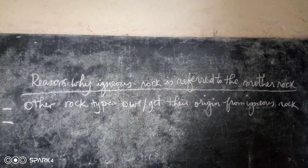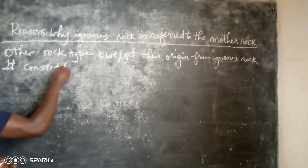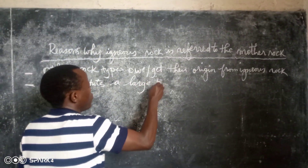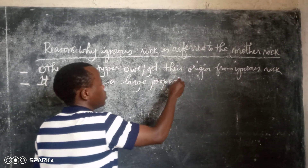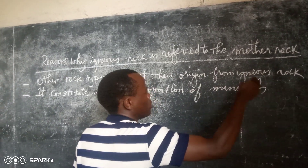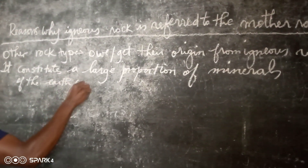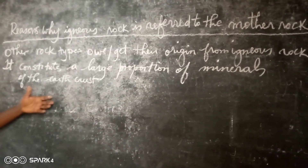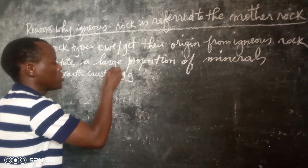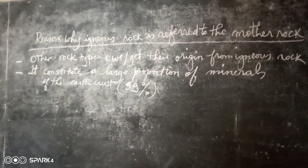Point number two: igneous rock constitutes a large proportion of minerals of the earth's crust. Meaning that the minerals that make up the earth's crust — 99% of them are igneous rock. That is why igneous rock is fundamental to earth minerals.